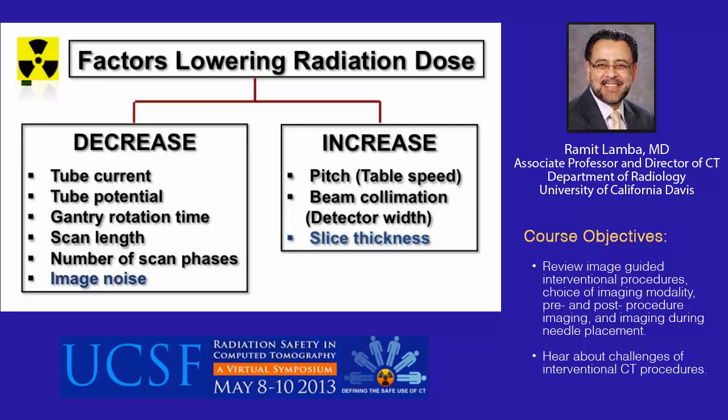CT factors that affect radiation dose include tube current, tube potential, gantry rotation time, scan length, and number of scan phases. An increase in pitch and beam collimation will also decrease radiation dose. In addition, radiation dose can be indirectly reduced by decreasing image noise, which can be achieved using soft reconstruction filters, iterative reconstruction techniques, or by increasing slice thickness.